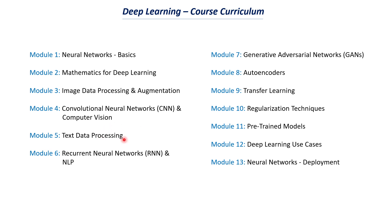The fifth module will be on text pre-processing, where we will discuss about tokenization, stemming, lemmatization, and various data pre-processing techniques that we have for text data. The next module will be on NLP, where we will be using recurrent neural networks to train NLP models. We will be discussing about RNNs, LSTMs, word embeddings, language models, and also pre-trained models and transfer learning concepts related to NLP.